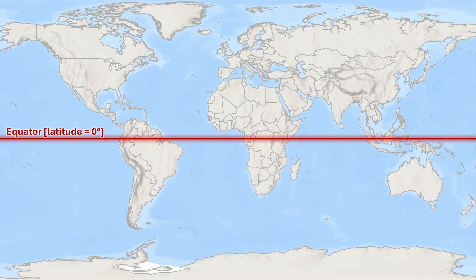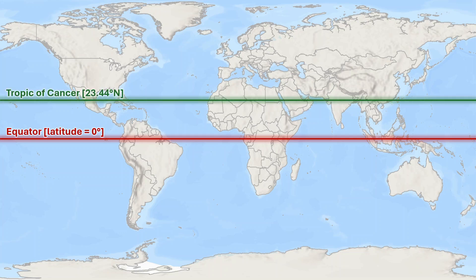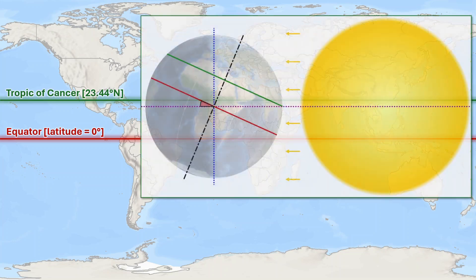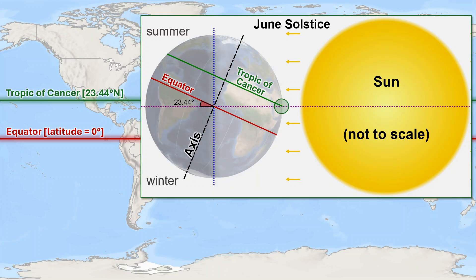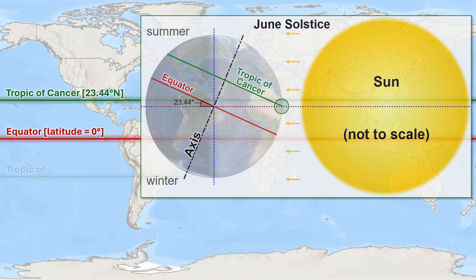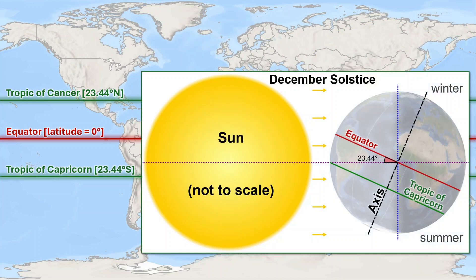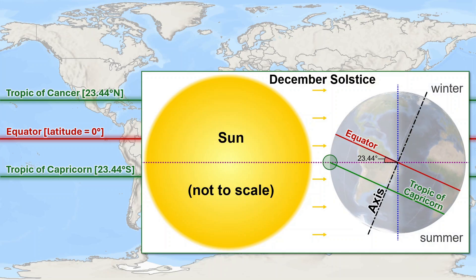Owing to Earth's axis being tilted at 23.44 degrees from the orbit plane axis, another special latitude is the Tropic of Cancer, the northernmost latitude where the Sun can be observed directly overhead. This occurs on the June solstice when the northern hemisphere is maximally tilted towards the Sun. The southern hemisphere counterpart is the Tropic of Capricorn, where the Sun passes directly overhead on the December solstice.